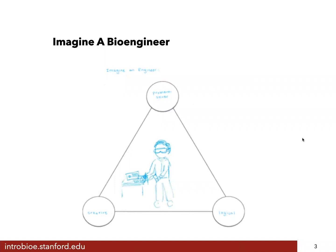Is that what a bioengineer looks like? Well, that's what she imagined. Looks like they're working at a bench. Maybe they've got safety goggles on. What were the words? A bioengineer is creative. A bioengineer is logical. A bioengineer is a problem solver. There's no right answer here. The exercise is just to get you to imagine what a bioengineer is at this point in the course, at the beginning of things.